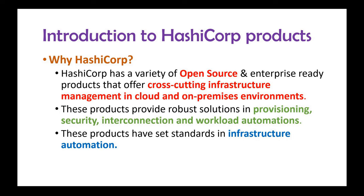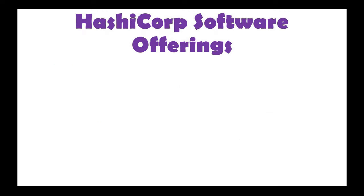HashiCorp has set standards in infrastructure automation using these products, and some of them are very common — most people already use them for that kind of automation. I'll map where these tools belong in your CI/CD pipeline along with a small description of what each one actually does, whether it's build, security, or something else. I just want to give you a list of the products and tools HashiCorp has so you can have a look.